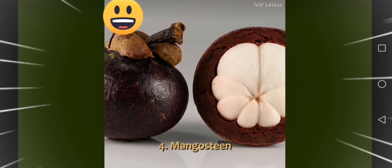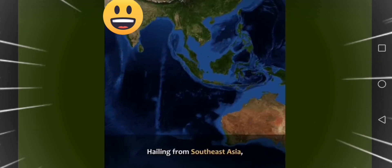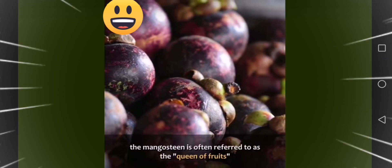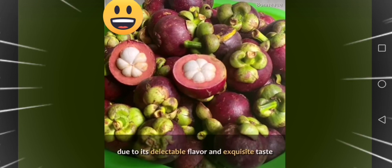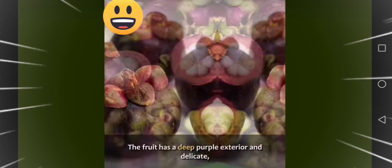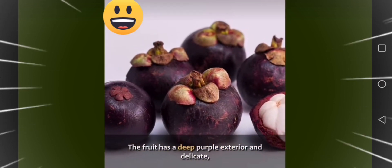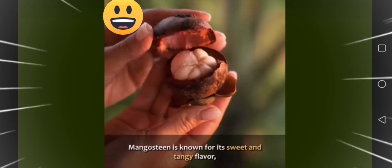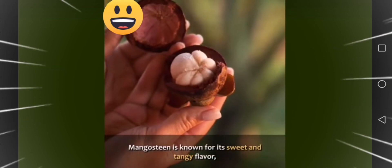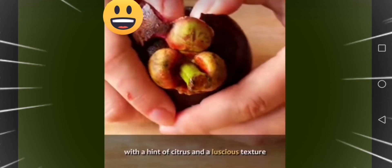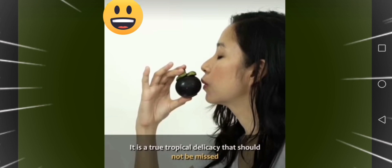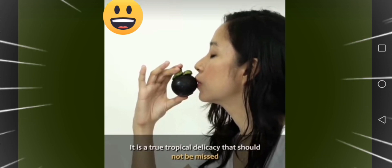Four, mangosteen. Hailing from Southeast Asia, the mangosteen is often referred to as the queen of fruits, due to its delectable flavor and exquisite taste. The fruit has a deep purple exterior and delicate, white, segmented flesh. Mangosteen is known for its sweet and tangy flavor, with a hint of citrus and a luscious texture that melts in your mouth. It is a true tropical delicacy that should not be missed.